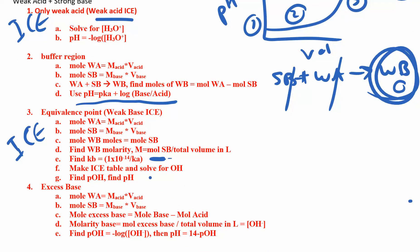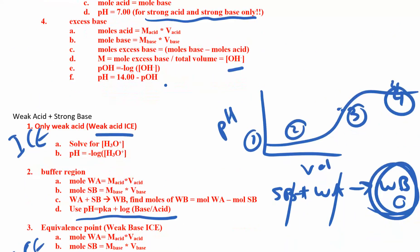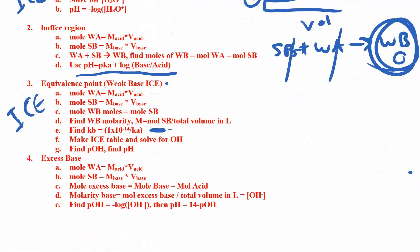For step four, it's exactly what you did in the first type of titration — you're finding the excess moles of your strong base. You'll have a little weak base, but it doesn't contribute much to the pH, so you're really just looking for the extra strong base, finding the pOH, and then the pH.